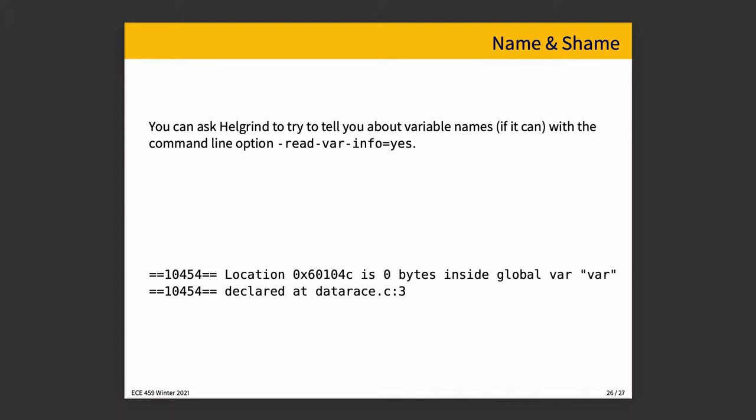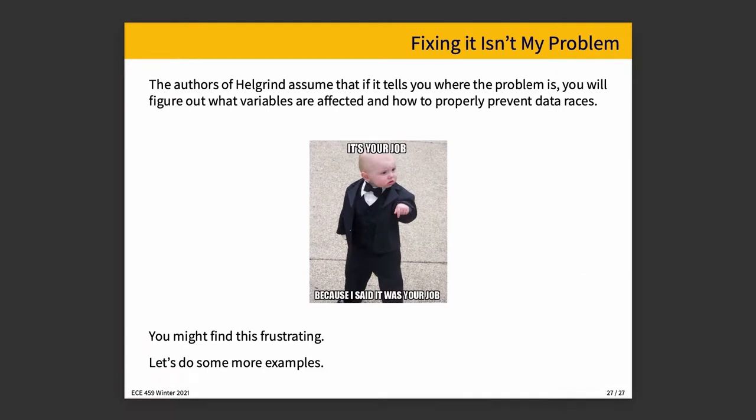You can ask Helgrind to try to tell you about variable names if it can with the command line option readvar info equals yes, in which case it might say, here's the exact variable where the race occurred as opposed to just a memory location, which is sometimes all you get. And as we saw earlier with the idea of Valgrind telling you where a deallocation goes, Helgrind doesn't tell you what fixes the problem. Fixing it is your job. It just says you will need to know here's the race that I observed or here's the lock ordering problem that I observed. And you have to be the one to decide how to address it. You have to be the one to decide how to fix it. It's your job. And the tool is just reporting the potential error that it sees and not really offering up solutions. This may be a little bit frustrating in the sense of like a serial complainer who thinks that if they just moan about what's wrong, they've done their part and now the rest is all up to you, which can be a little grating over time.